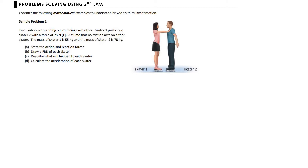We've got two skaters who are standing on ice facing each other. Skater 1 pushes on Skater 2 with a force of 75 newtons to the east, so let's take that direction to be the east direction. Assume that no friction acts on either skater. The mass of Skater 1 is 55 kg and the mass of Skater 2 is 78 kg.